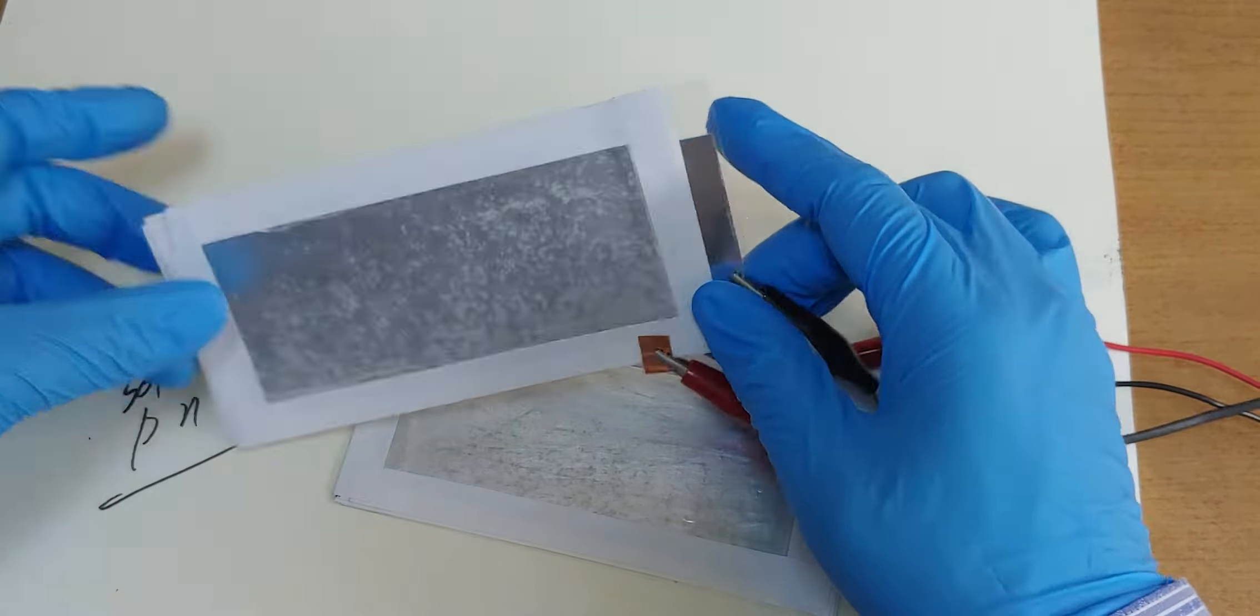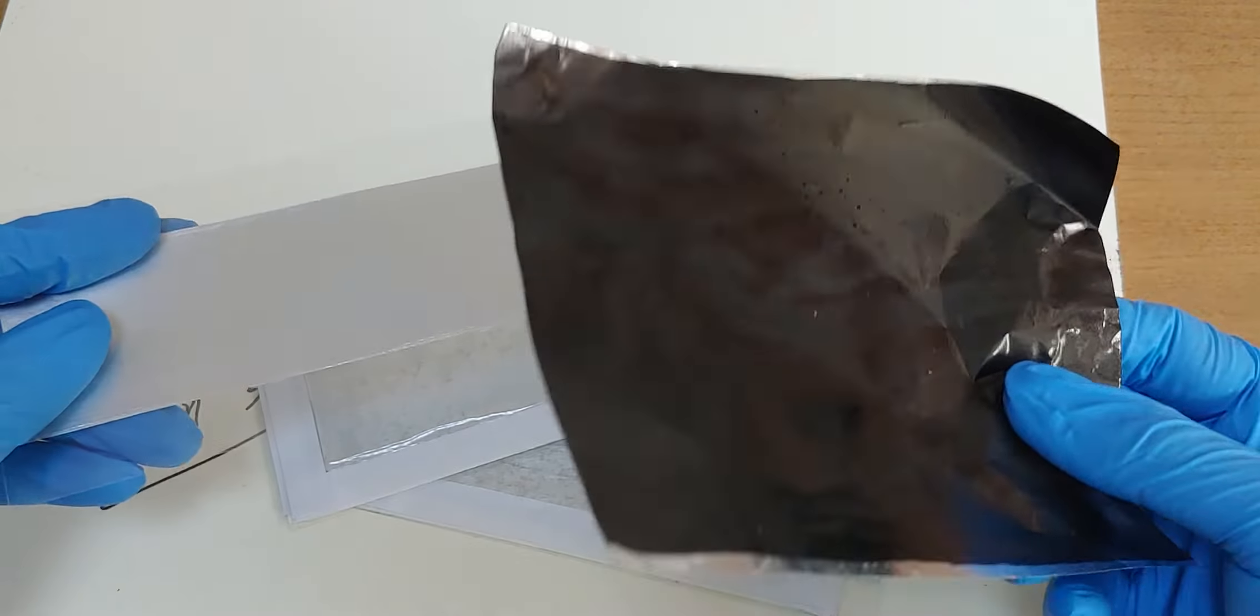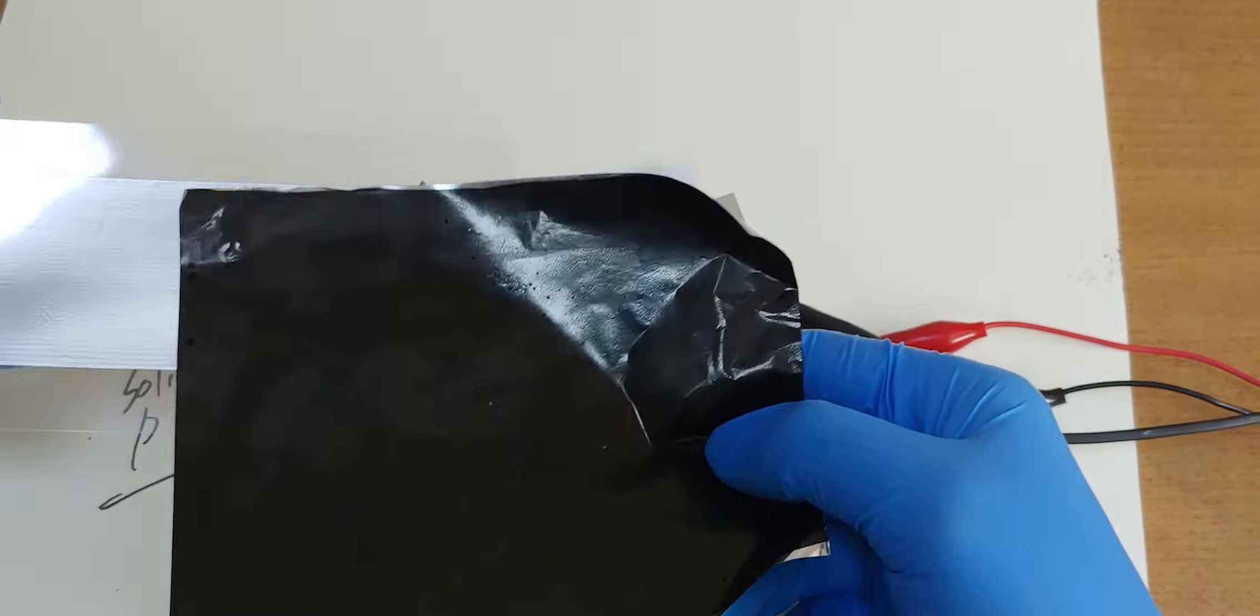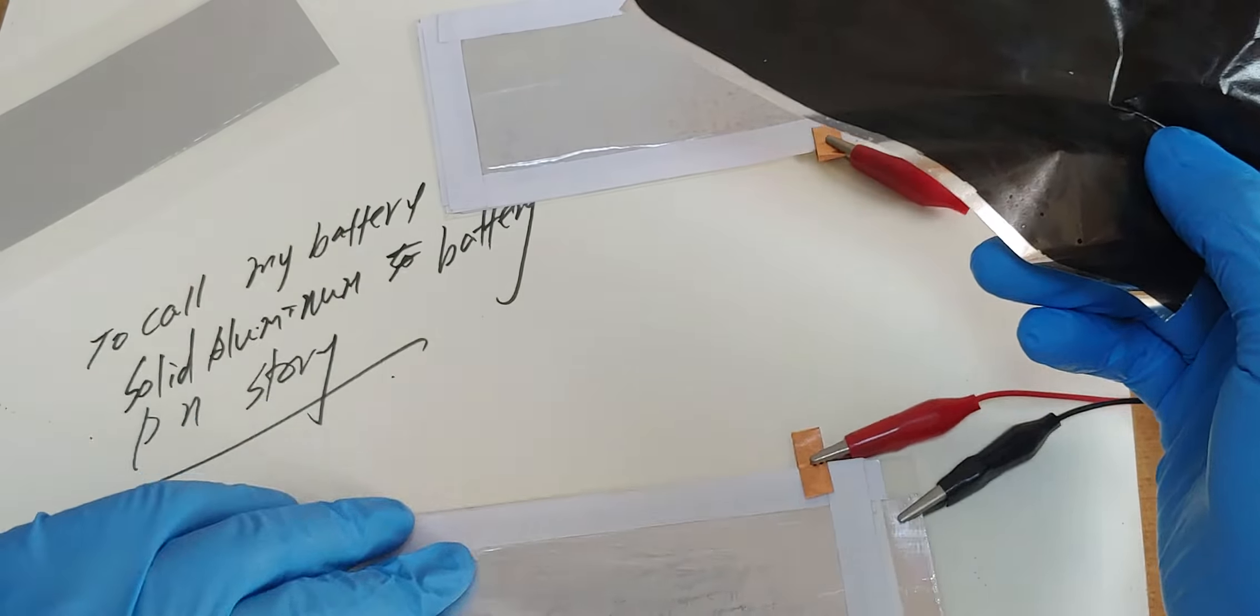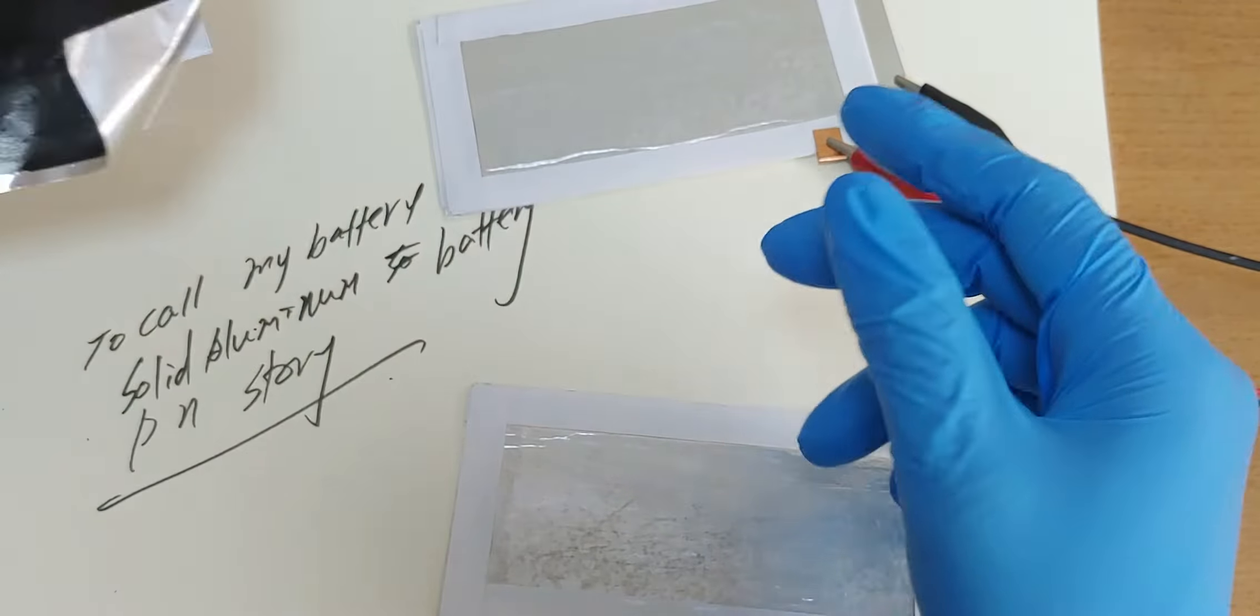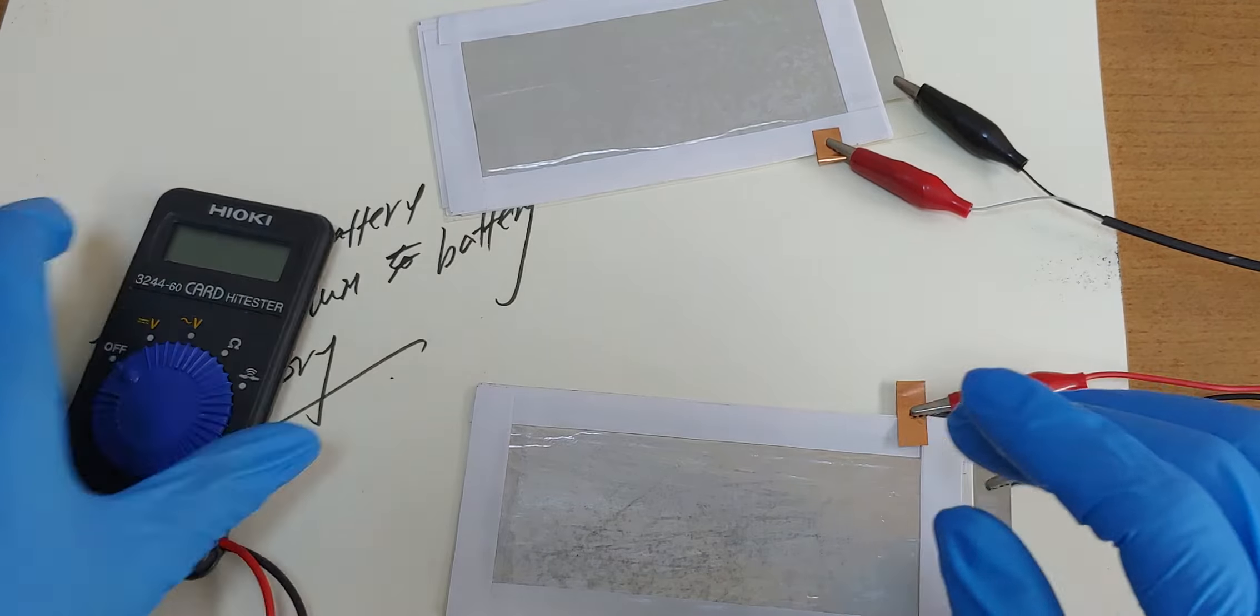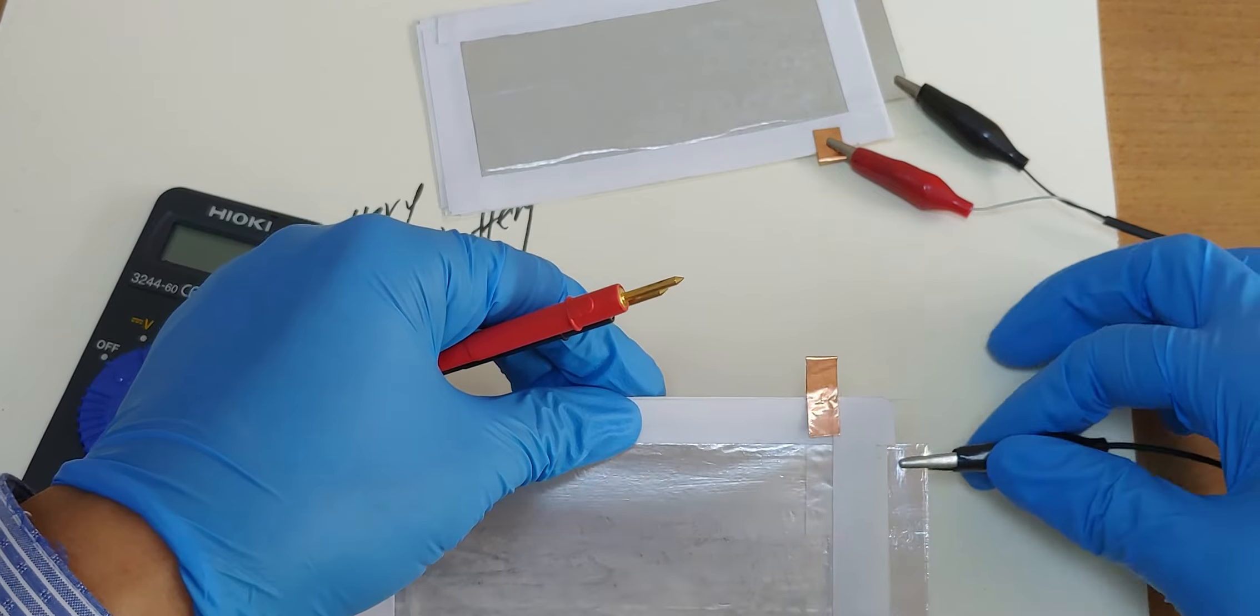Maybe this is aluminum and aluminum like this. And this one is aluminum, graphene, and aluminum. One is made like this. Let me see.